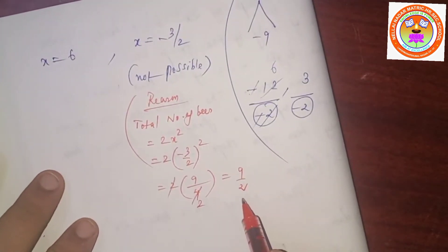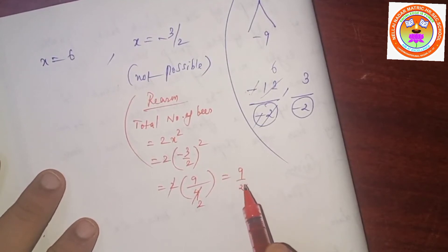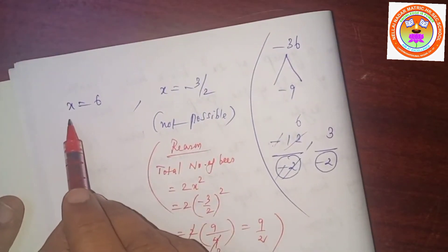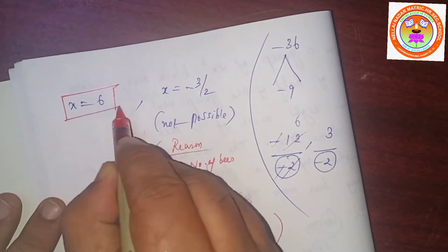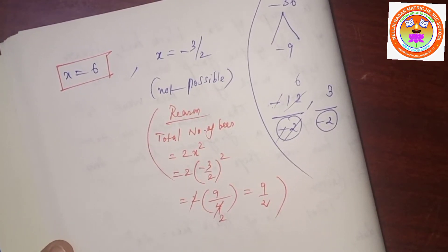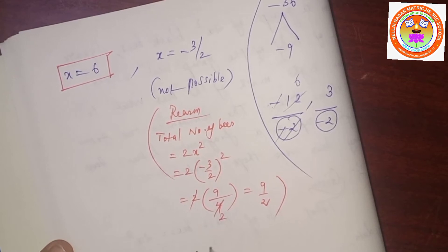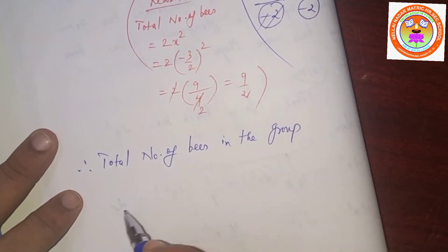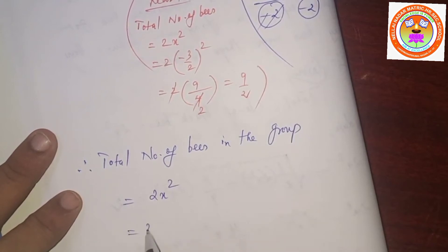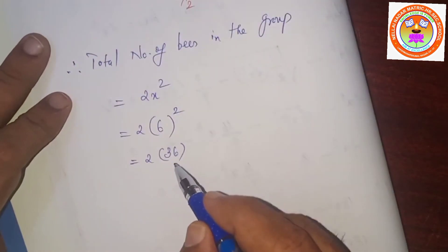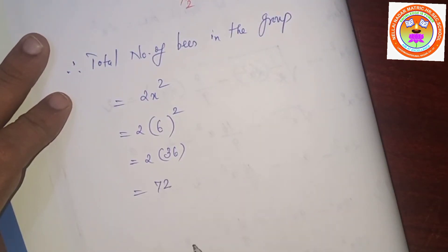Therefore x equals 6. The total number of bees in the group equals 2x squared equals 2 times 6 squared equals 2 times 36 equals 72. Total number of bees is 72.